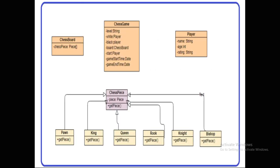Let's check out an example. This is a small basic class diagram of a chess game where we have ChessBoard, ChessPlayer, and ChessPiece. ChessPiece includes king, queen, etc. ChessBoard holds a different array of pieces, and Player will have name and rating. This is just a simple diagram of a chess game.